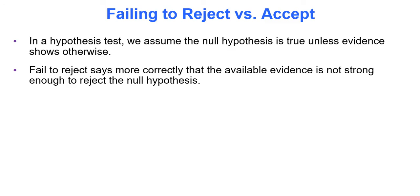In a hypothesis test, we assume the null hypothesis is always true unless evidence shows otherwise. Failing to reject says more correctly that the available evidence is not strong enough to reject the null hypothesis. In statistics, it's proper to say 'fail to reject' rather than 'accept' — though in common language they may mean the same thing, always say 'fail to reject' in a formal setting.